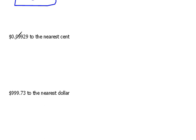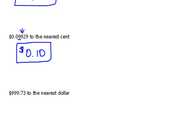Here we have 0.09929 rounded to the nearest cent. Remember, the nearest cent is another way of saying the nearest hundredth. So this first nine is in our hundredths position. We look one place to the right — this tells us to round the nine up. If we round it up, that becomes 10. So rounded to the nearest cent, nine cents basically rounds up to 10 cents.